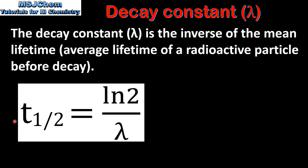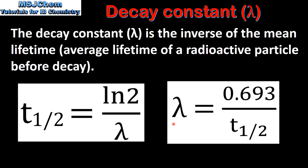This equation is given in section 1 of the data booklet. T half is the half-life, ln2 is the natural log of 2, and lambda is the decay constant. When we rearrange the equation we get the decay constant is equal to 0.693, which is the natural log of 2, divided by the half-life.